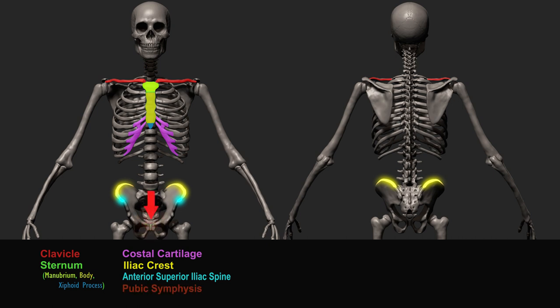This here is the pubic symphysis. It is a cartilaginous joint located between the left and right pubic bones near the middle of the body.